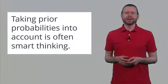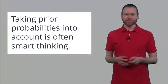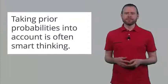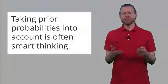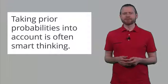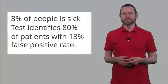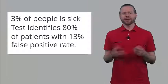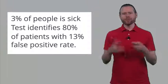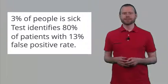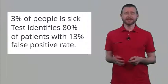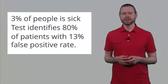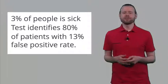Taking prior probabilities into account is very often smart thinking. We can look at an example from medical science to see the point of thinking about priors. Let's take a situation where about 3% of the people in the population is sick. We have a test that can identify whether you have this illness or not, and this is correct 80% of the time.